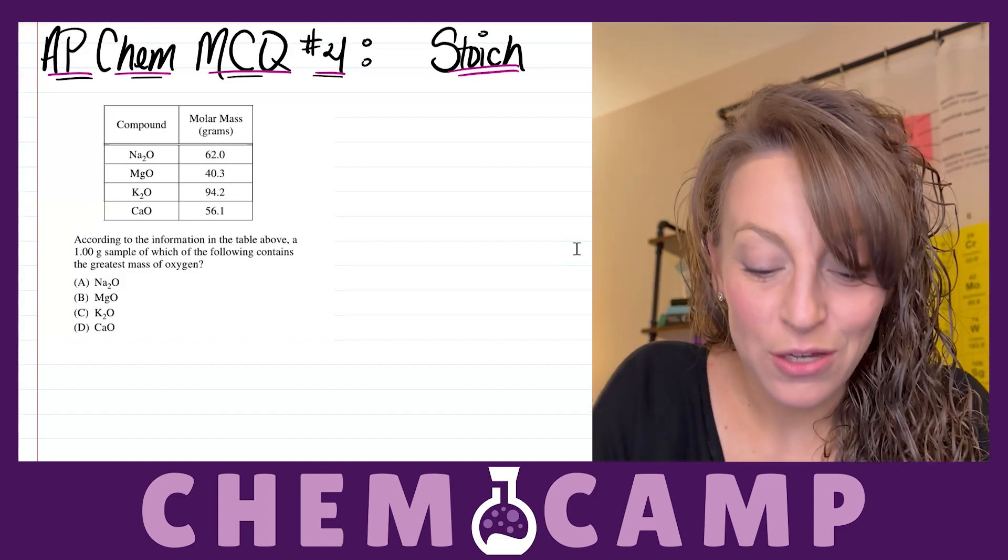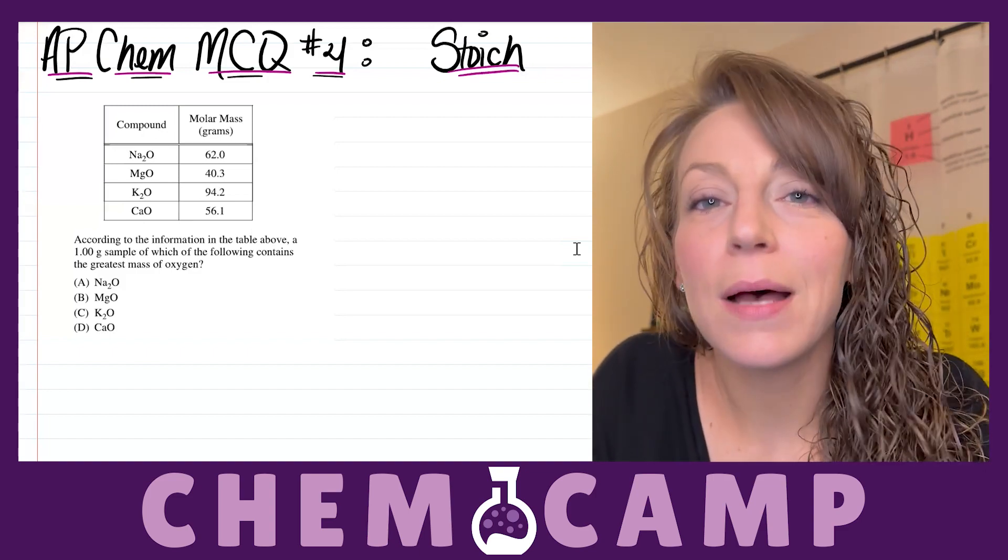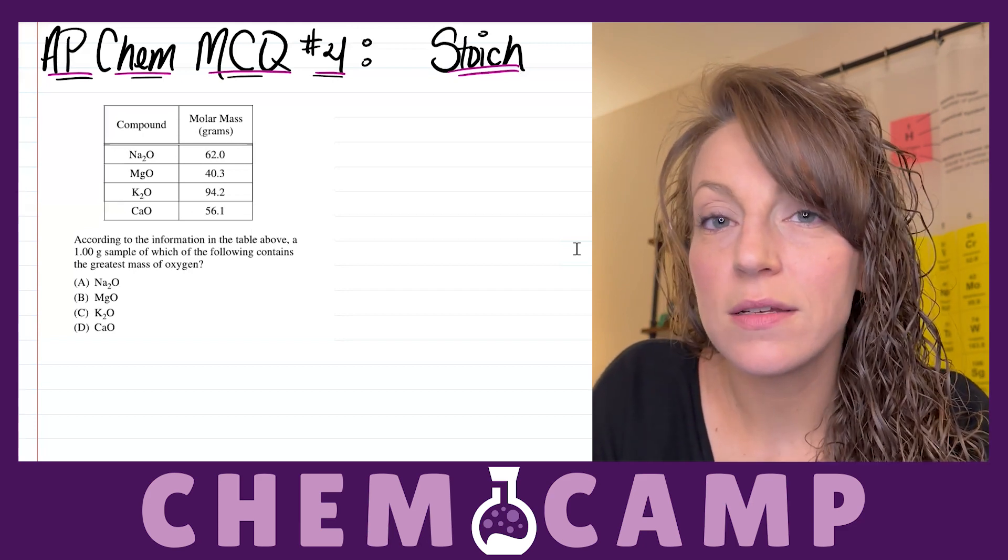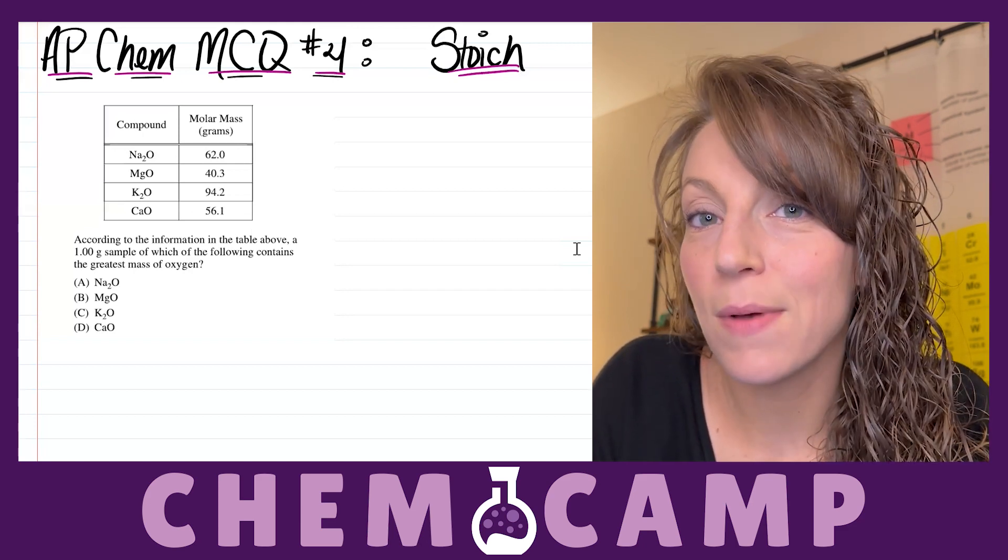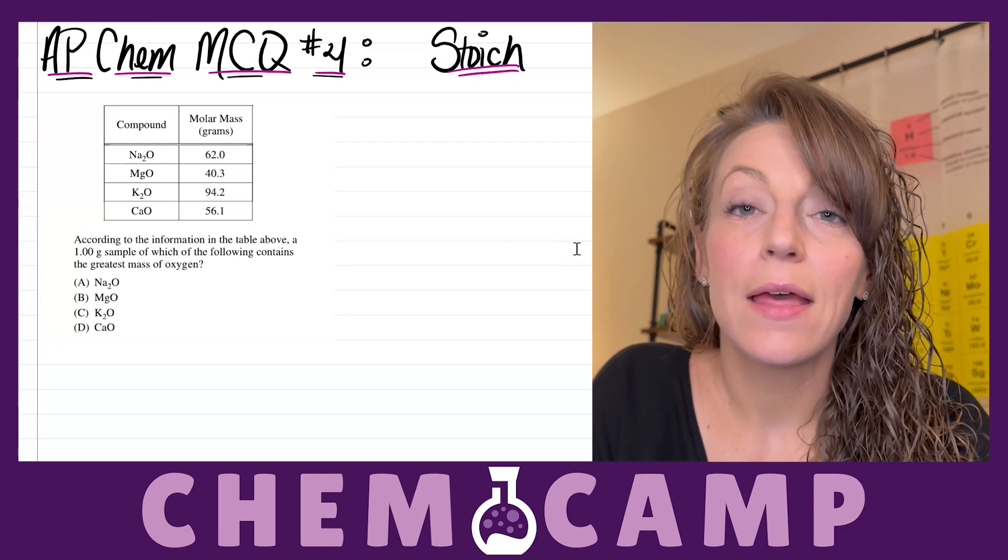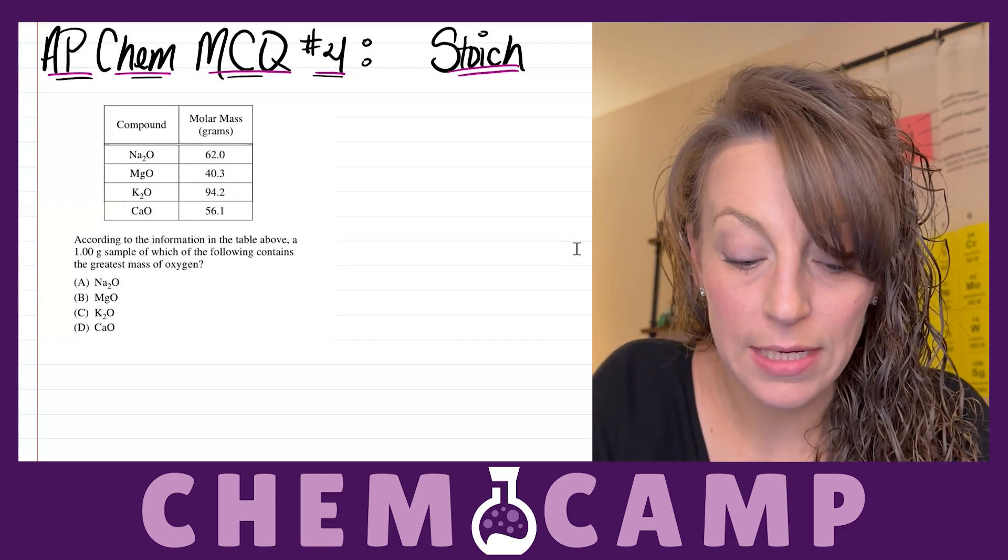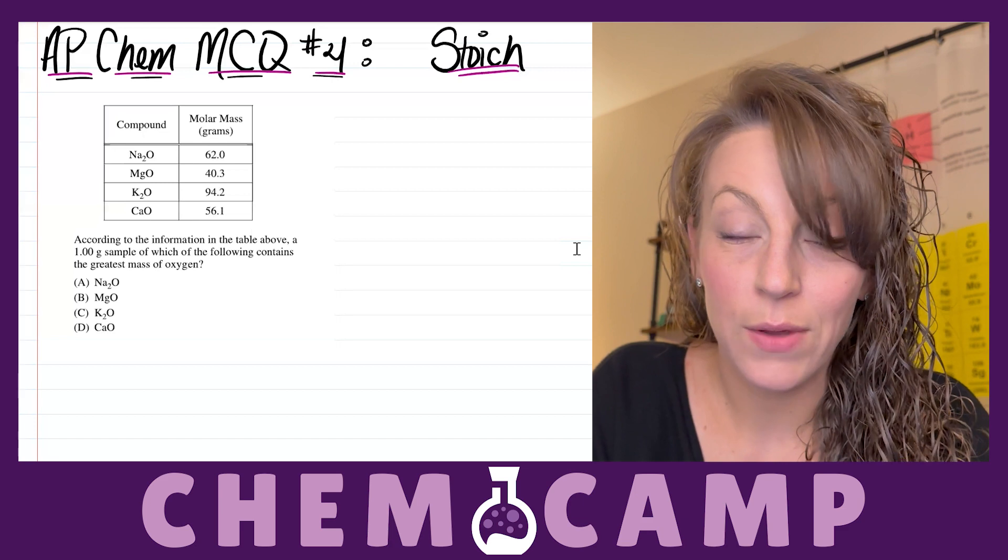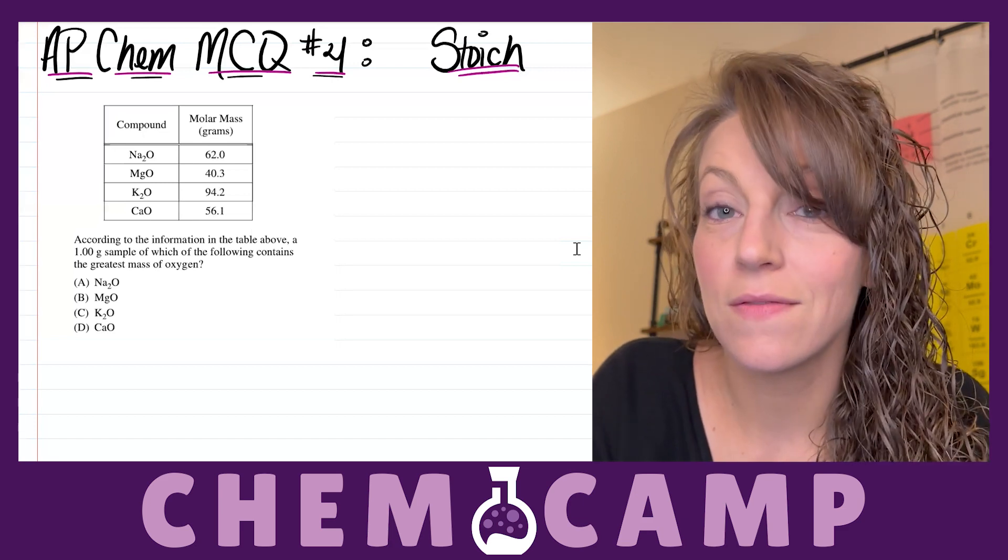The problem reads: according to the information in the table above, and in that table they give us four different compounds and their corresponding molar masses, then the problem continues to read a one gram sample which of the following contains the greatest mass of oxygen.